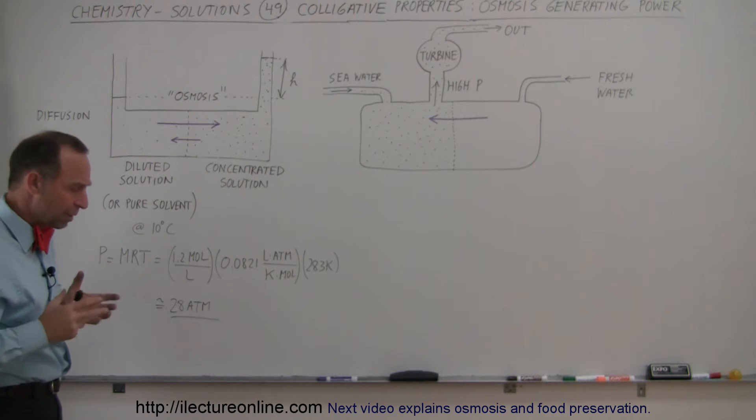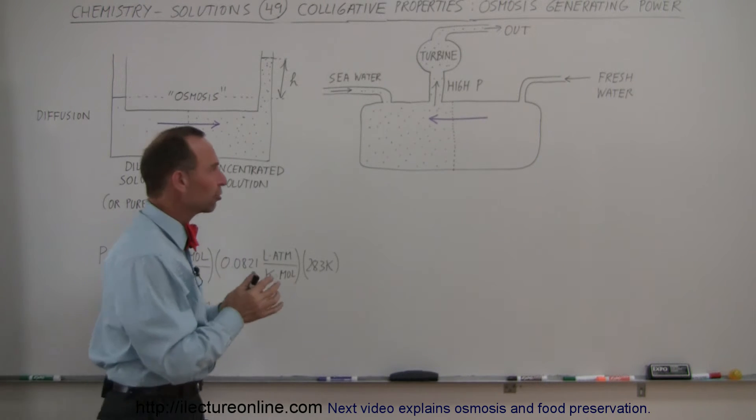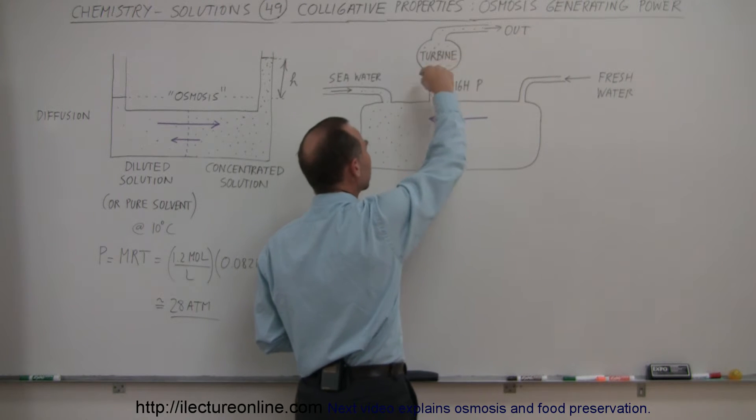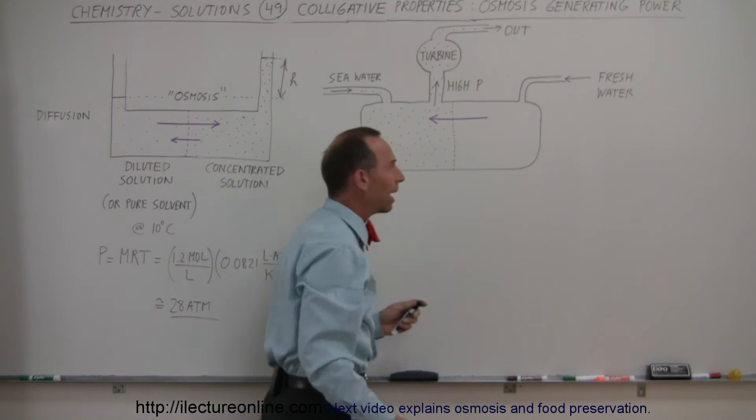Because of that enormous pressure pushing the water up, if we can push that water up through a turbine, we can actually make the turbine turn, generate electricity of course, and the wastewater will flow out.